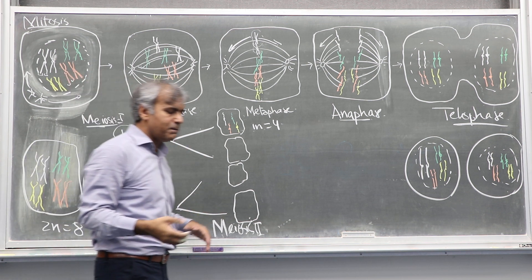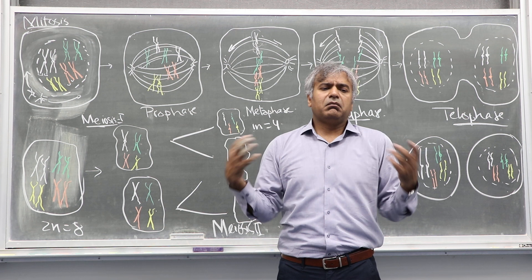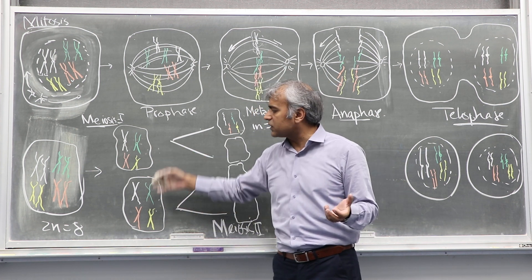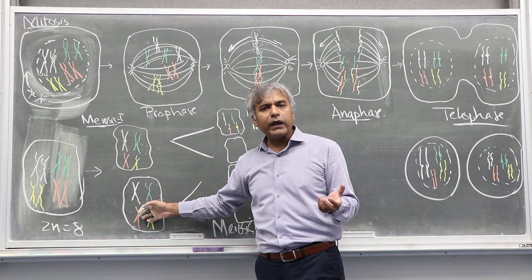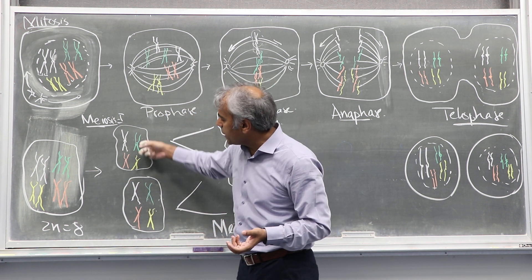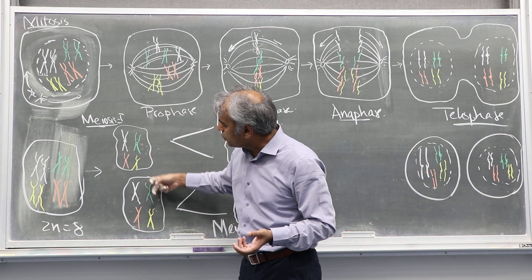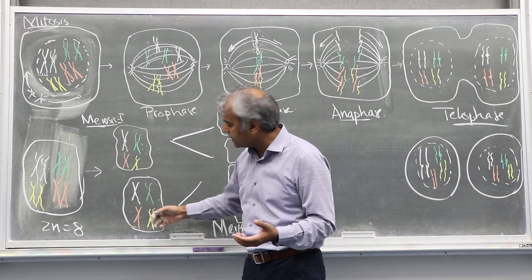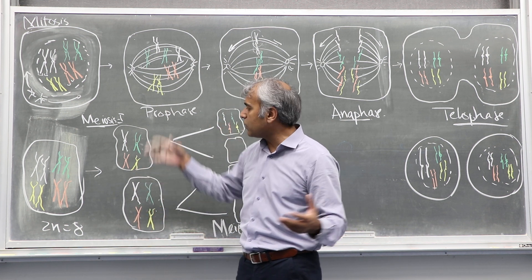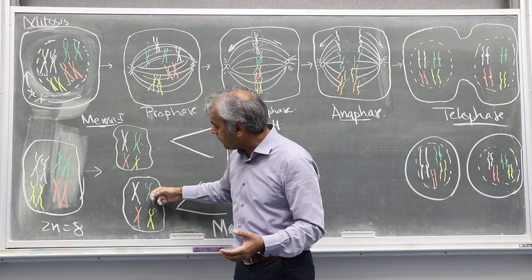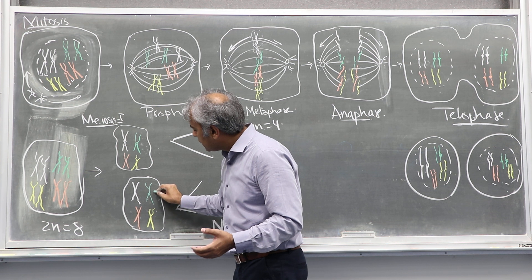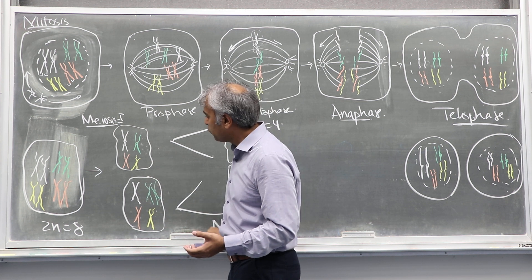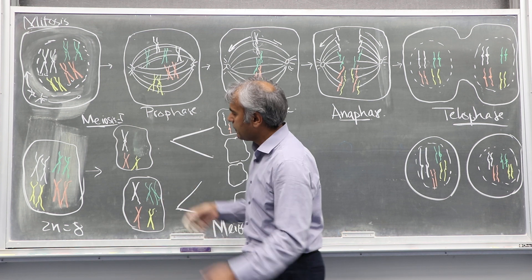Why is meiosis important? Because there are disorders like Down syndrome — it's a chromosome 21 trisomy. This is a defect at the meiotic stage where instead of two homologs going to opposite cells, imagine the green chromosome homologs: the white, orange, and yellow ones very successfully went to opposite poles, but the green one ended up on the same side, and one cell inherited both homologs, failing normal meiosis.